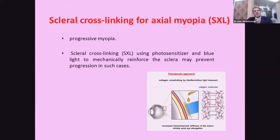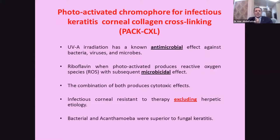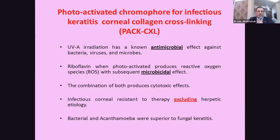Scleral cross-linking for axial or progressive myopia uses a photosensitizer and blue light to mechanically reinforce the sclera and potentially prevent progression. There is also antimicrobial cross-linking: ultraviolet irradiation has a known antimicrobial effect, and photo-activated riboflavin has a microbicidal effect. Therefore, cross-linking can be used in corneal infections resistant to therapy — particularly effective for bacteria and Acanthamoeba, less so for fungi — but herpes must be excluded as ultraviolet can reactivate herpetic infection.